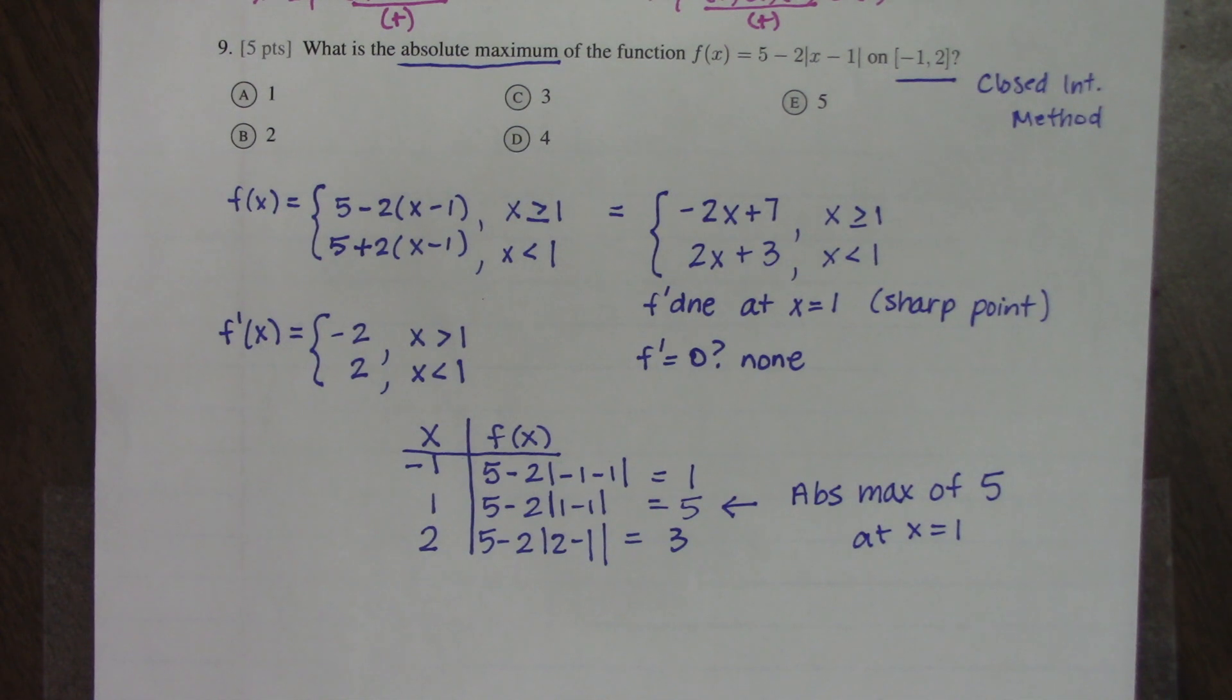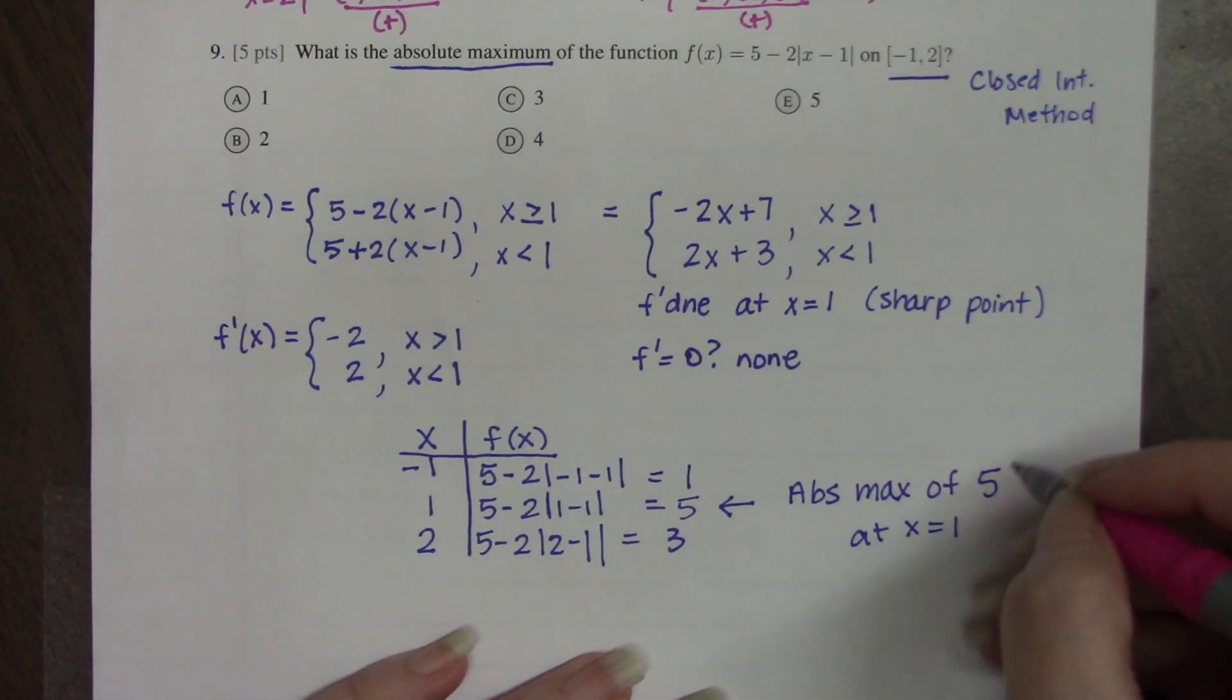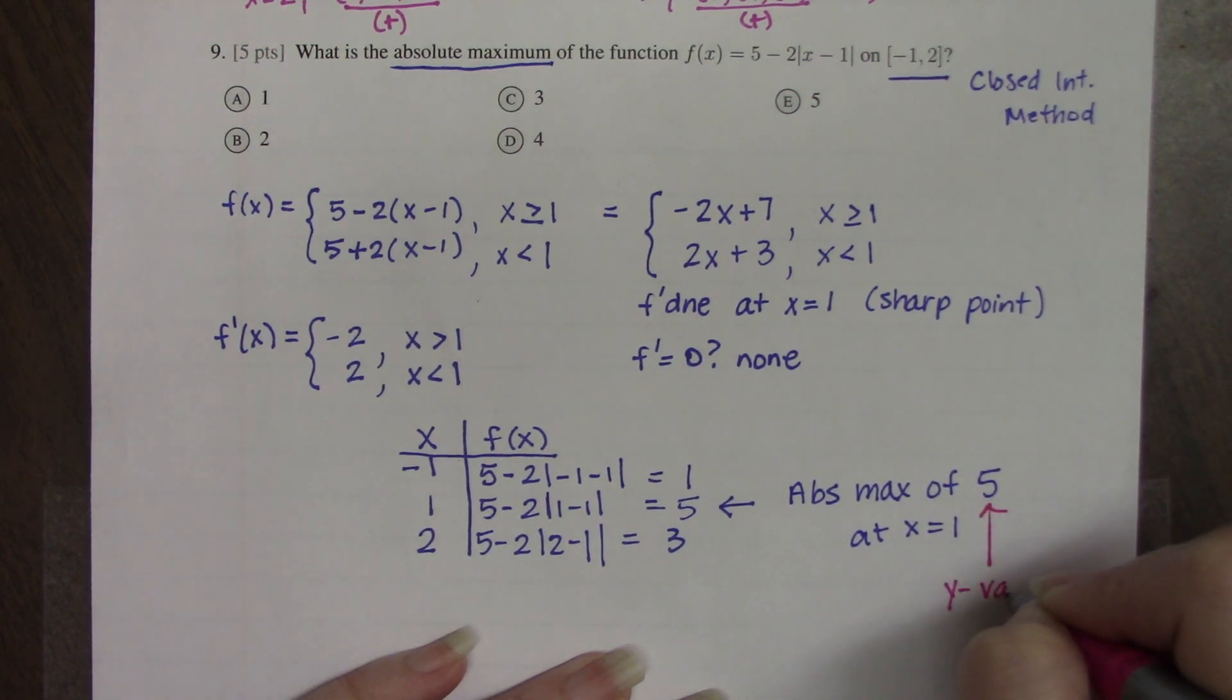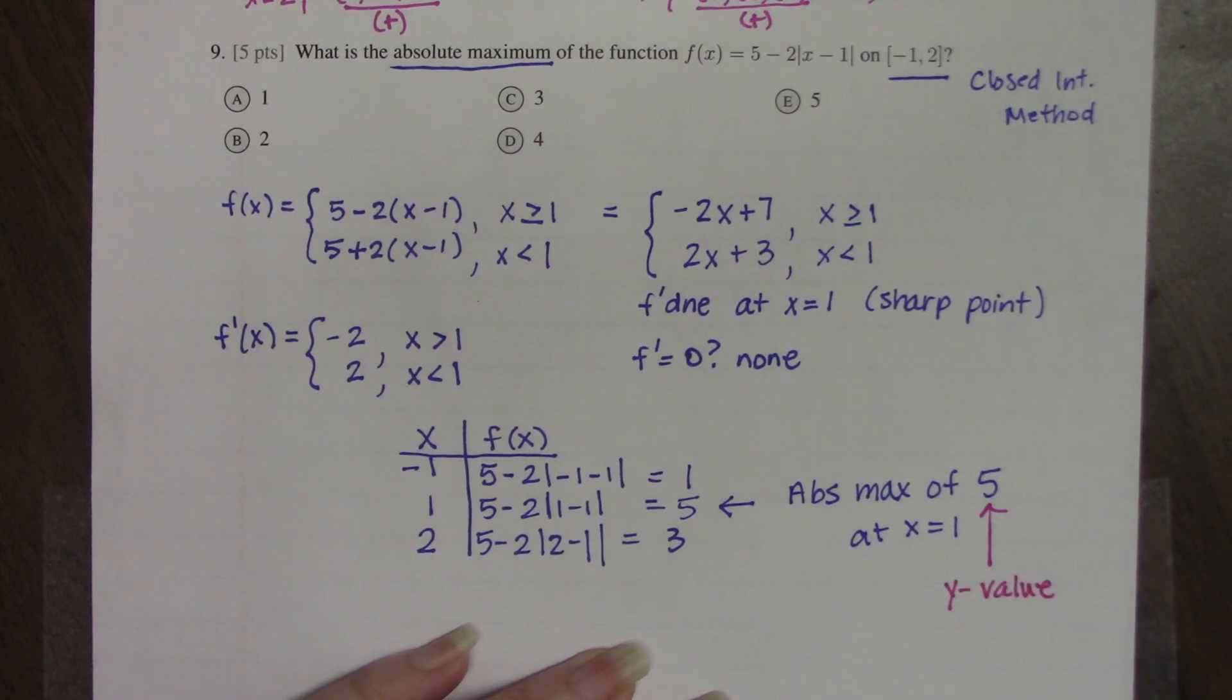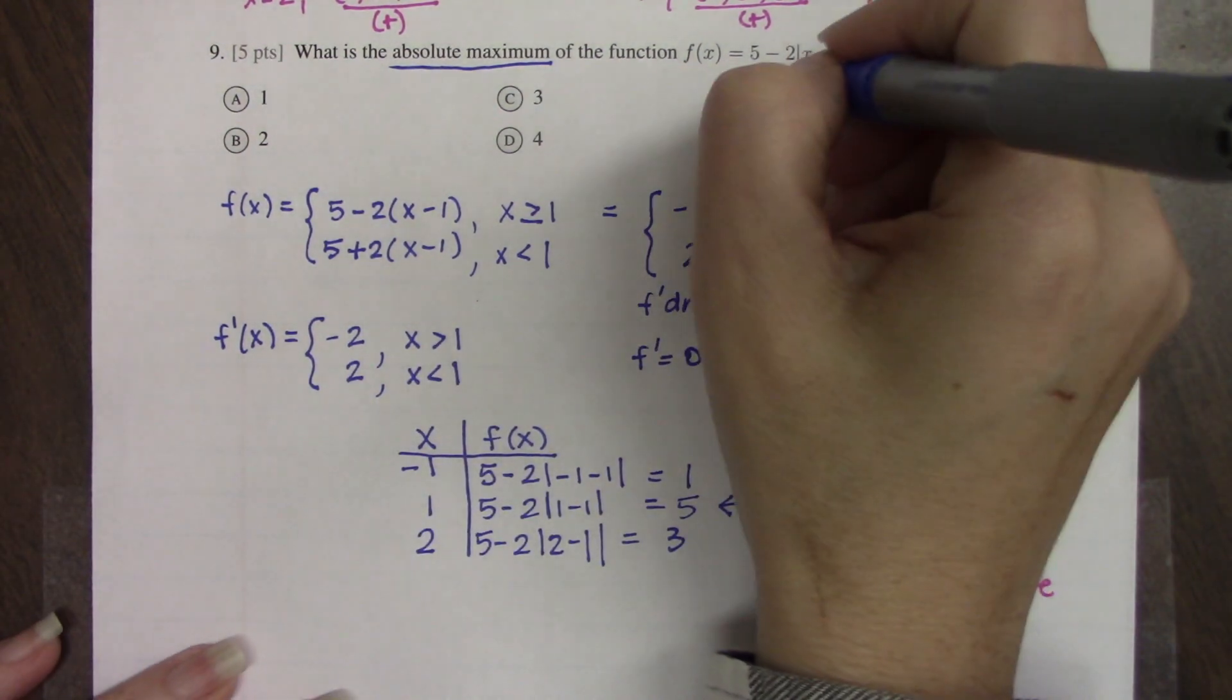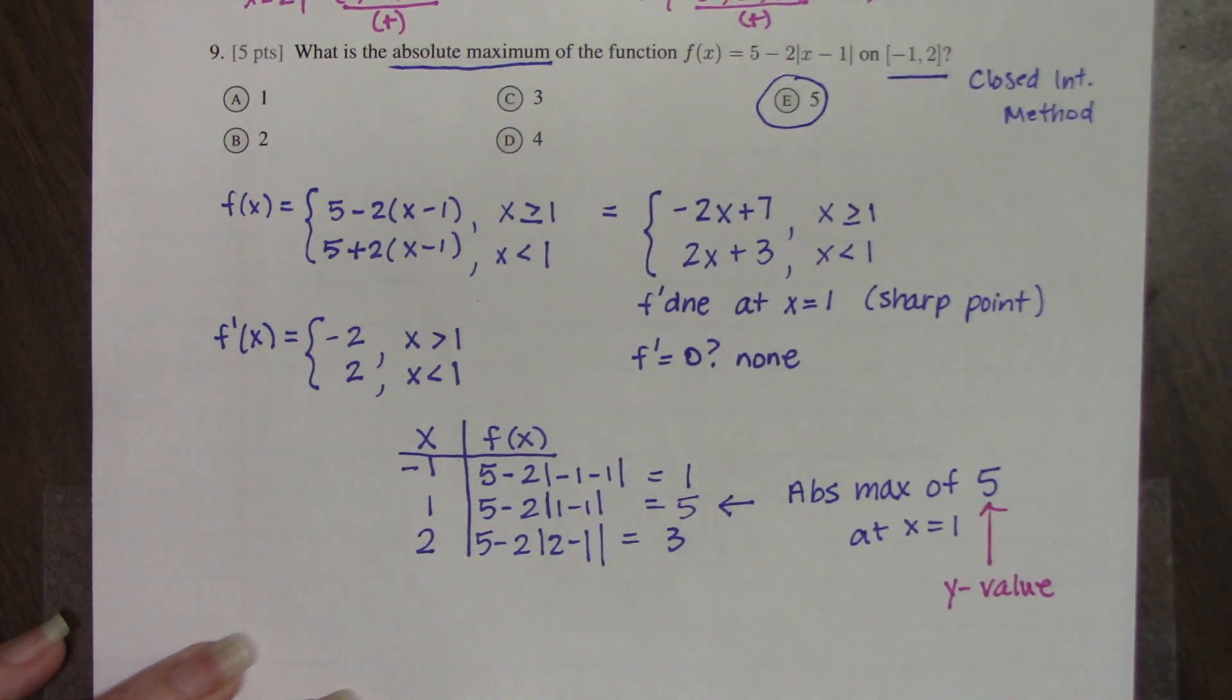Now, in terms of circling the correct answer, because both 5 and 1 are answer choices, when we're talking in terms of absolute extrema, it is the y value that is actually the extrema. So we want to know, well, what exactly is the highest point on the graph, right? Or what exactly is the lowest point on the graph? So it's actually the y value that you're reporting back. The x value is just where it's happening. But the value itself is the y value. So that means that 5 is the correct answer.